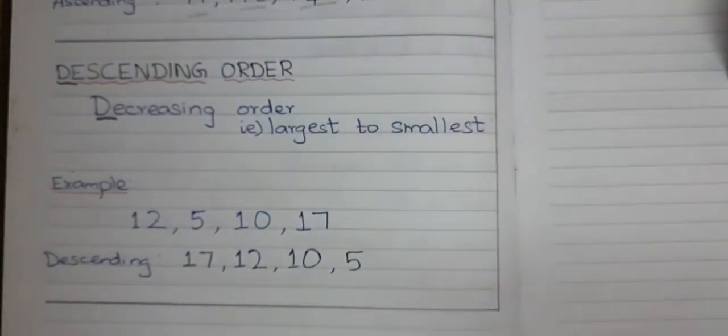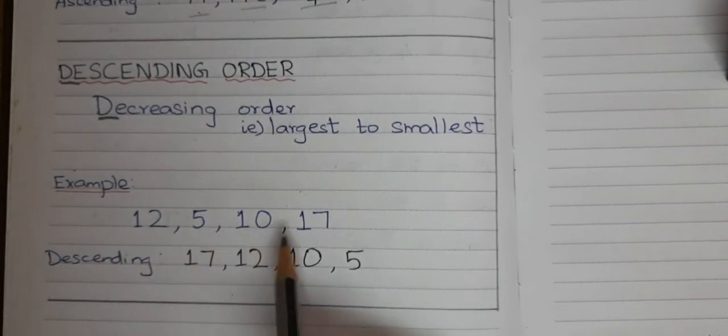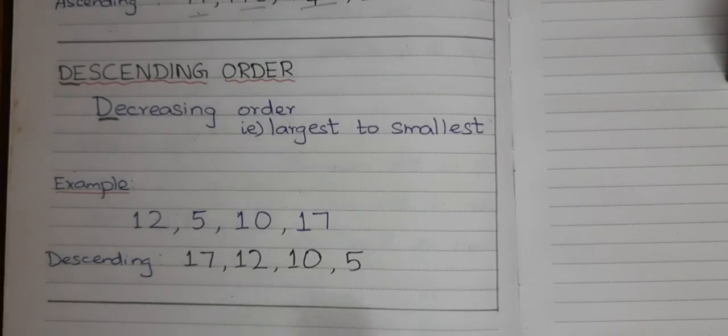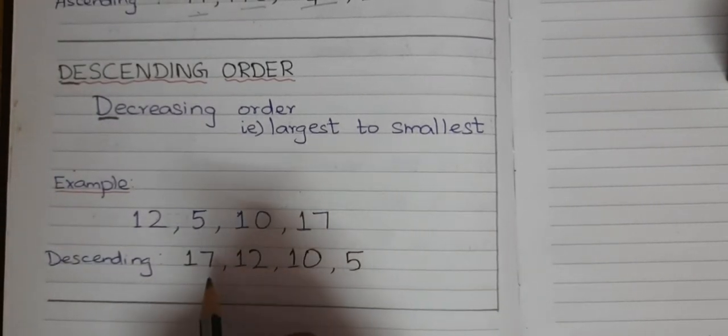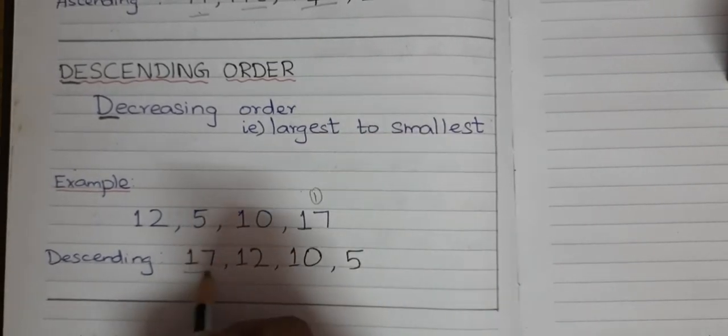Let me solve this with an example. Example 12, 5, 10, 70. Now, I have to found the descending form. Descending means largest. This is the largest number here. 70. First, you have to write 70.